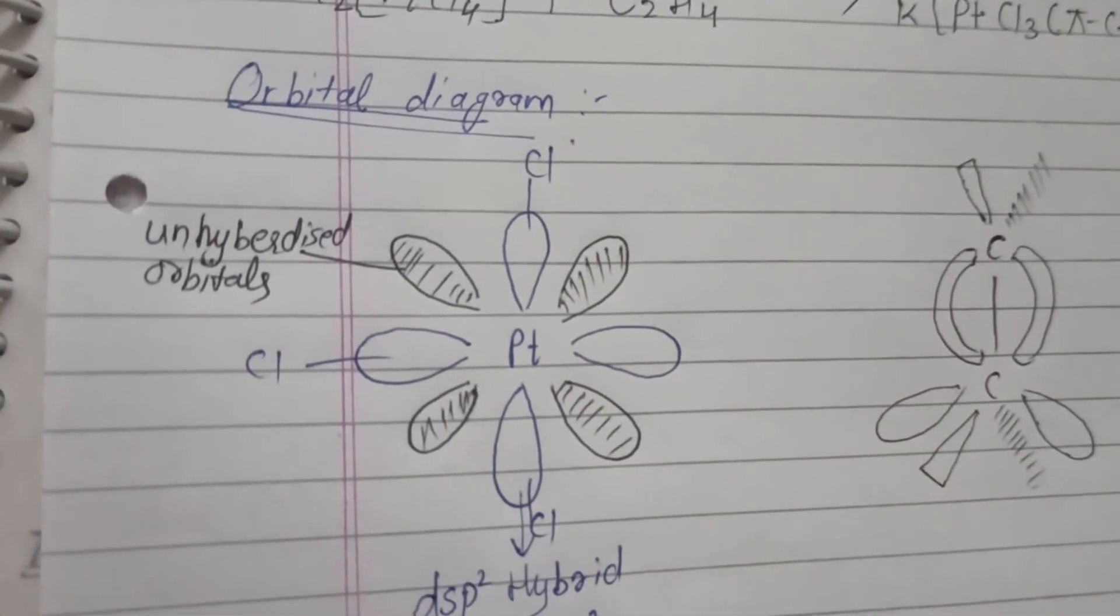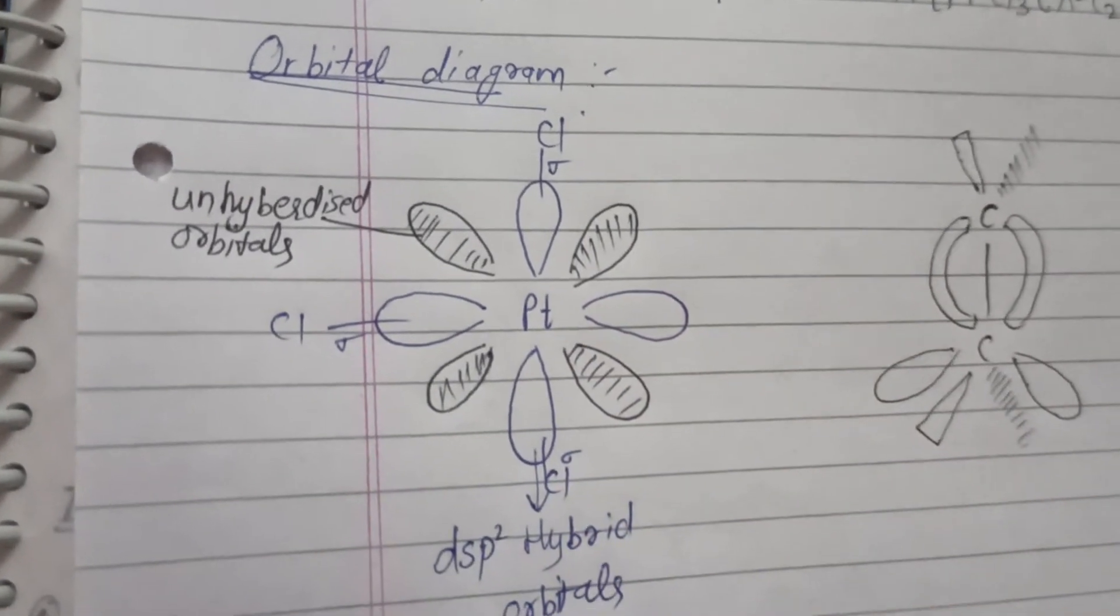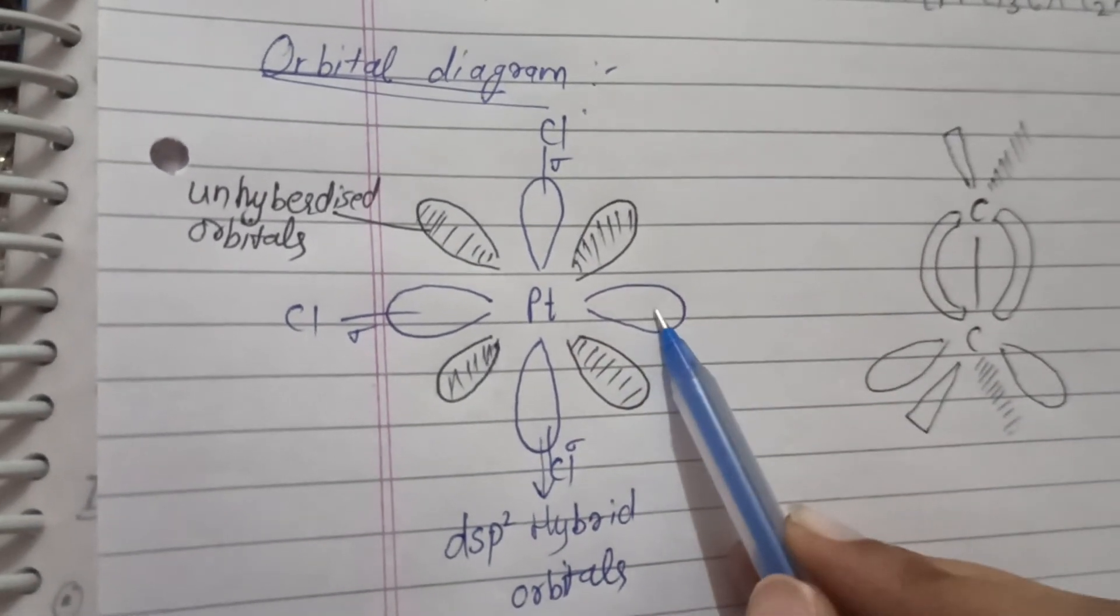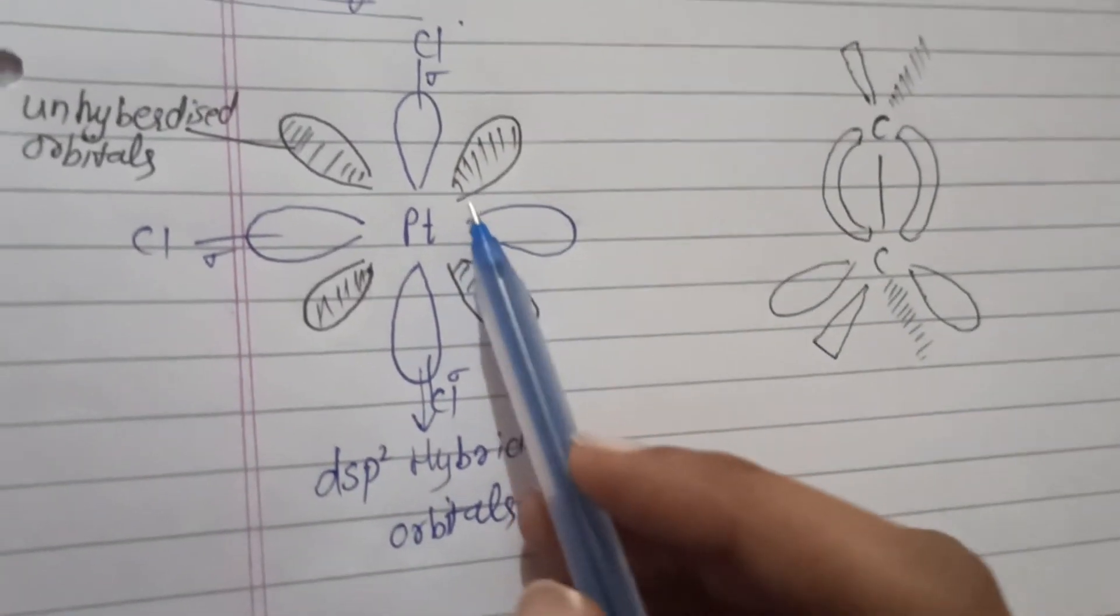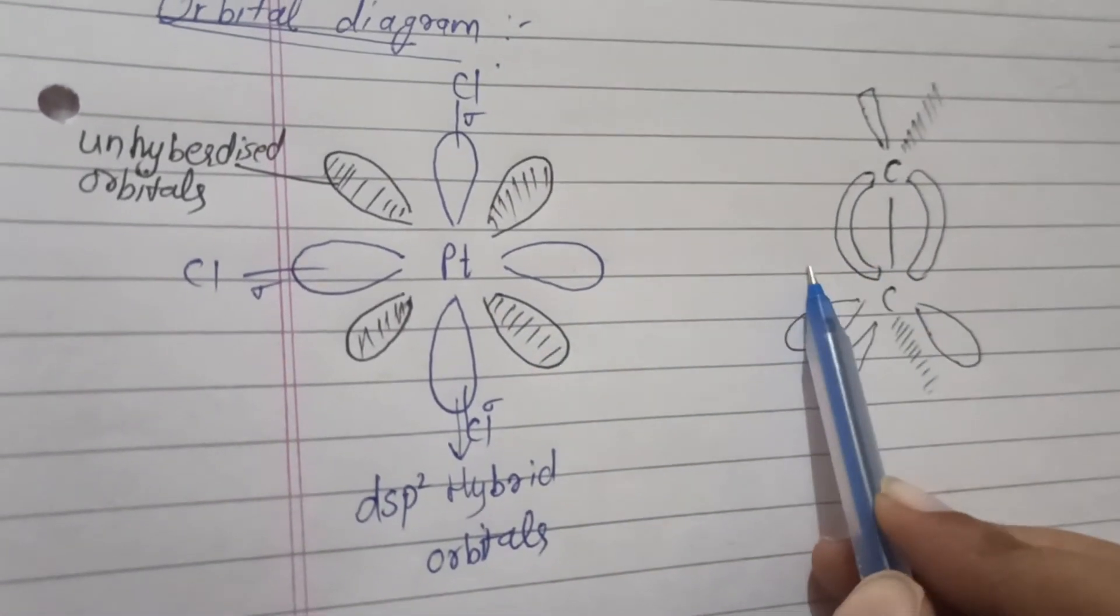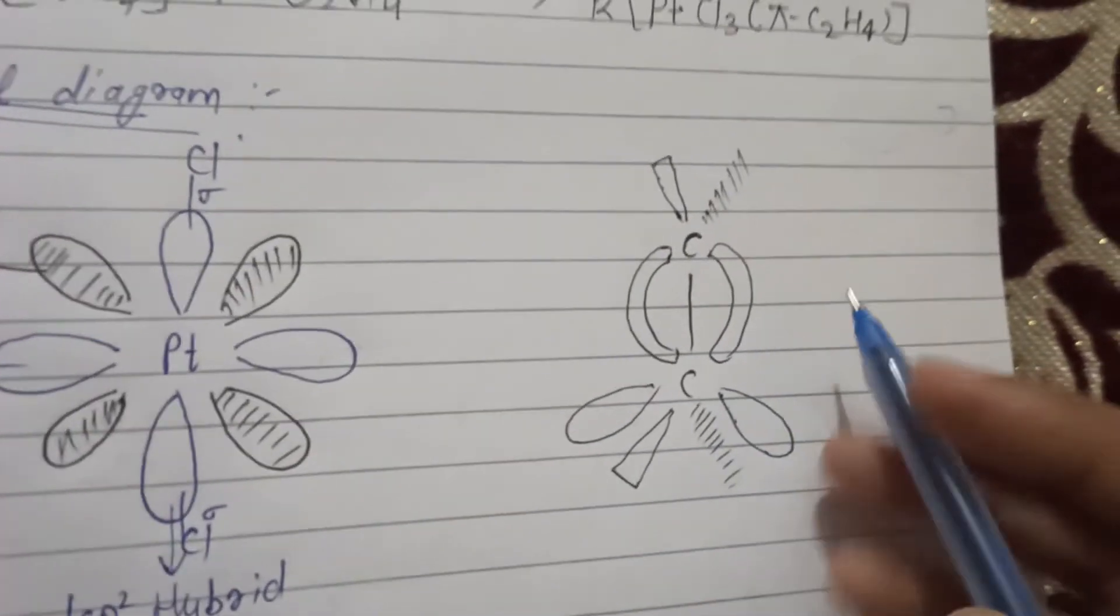So all these are hybrid orbitals. We will create 3 bonds to chlorine. Like you can see that 3 sigma bonds with chlorine are made. Clear that this is sigma and 3 bonds are made. And after that we have this hybrid orbital, this will be the bond, and we have the alkyne with this bond.